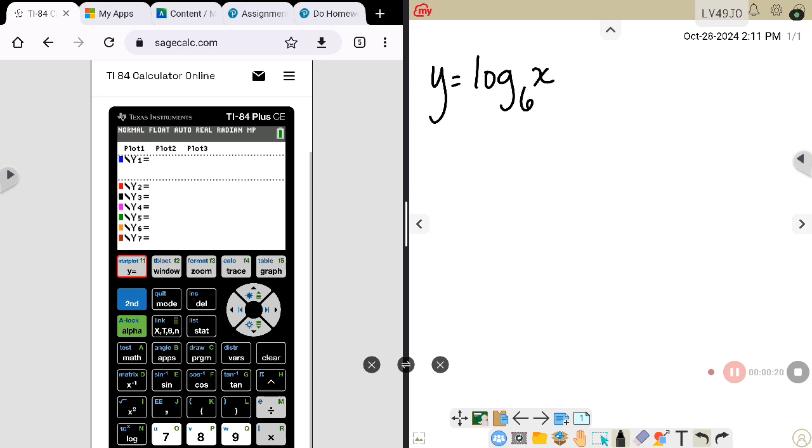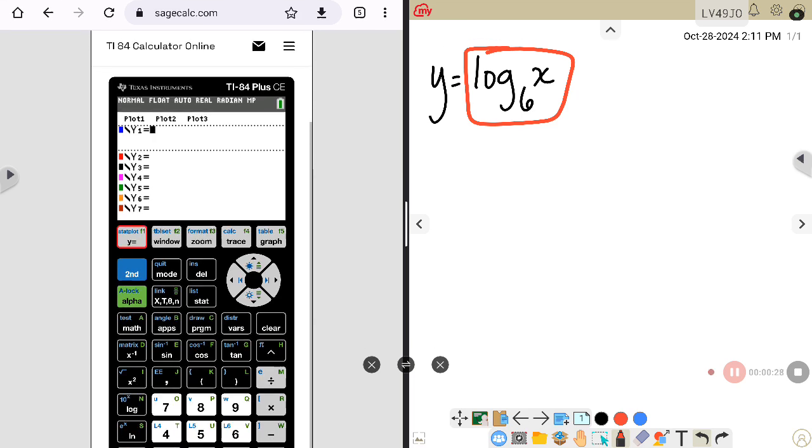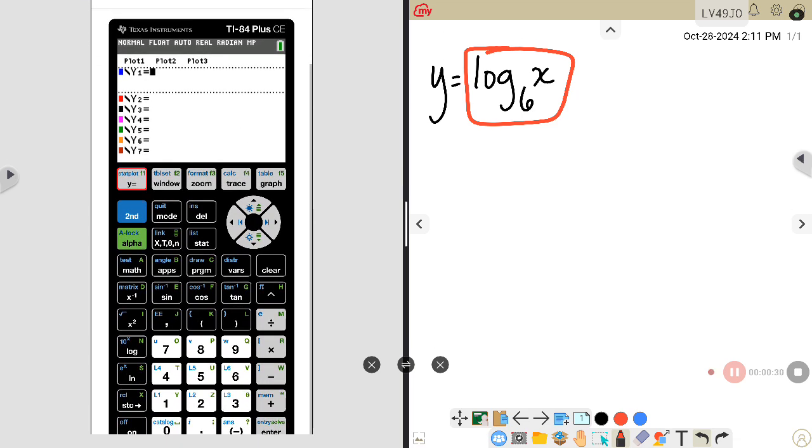First thing is we need to find out how to enter this into our calculator. So I'm in the y equals, what I am going to hit is the math button. Then once I hit the math button I am going to keep scrolling all the way down until I get to that capital A.